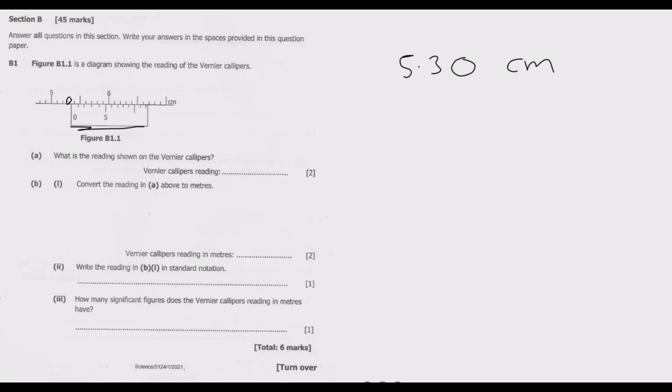We need to look for the point where the reading from the main scale and the caliper scale are crossing. So we need to count.